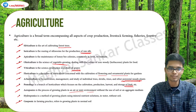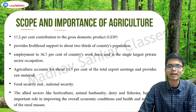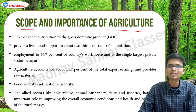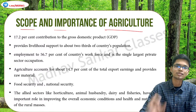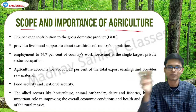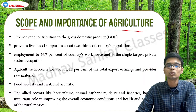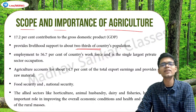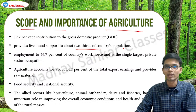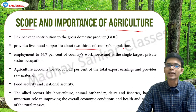Now the scope and importance of agriculture: as far as India is concerned, 17.2 percent of our GDP is contributed by agriculture and allied sectors — almost one-fifth of our entire gross domestic product. India being a primary sector country, agriculture provides livelihood to about two-thirds of our population. Agriculture is a very important topic, especially considering the recent farmer protests which ended after the government made several promises relating to the farm laws.